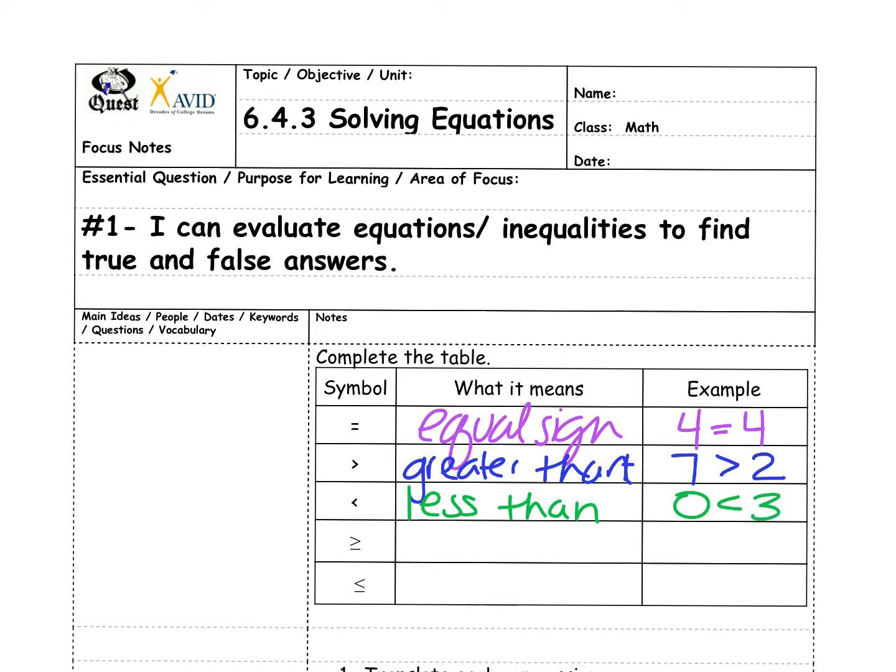And then down below they're very similar to greater than and less than but they now have that line underneath which is actually part of our equal. So we can say greater than or equal to. Not only is it greater, it could also be equal.